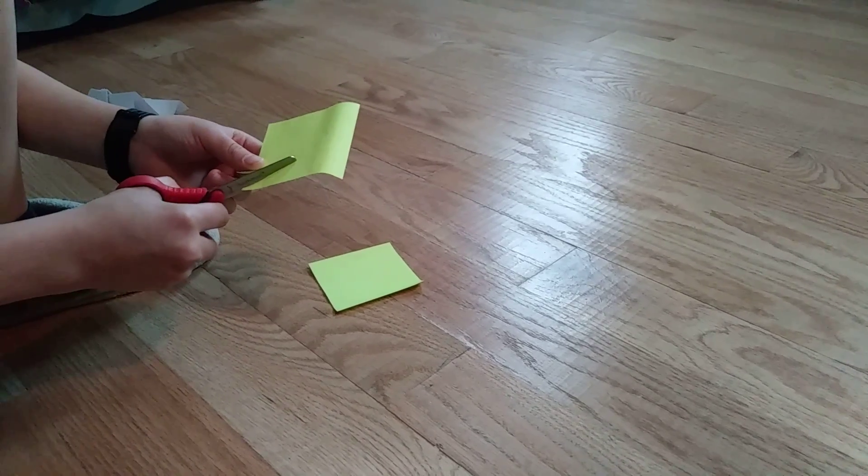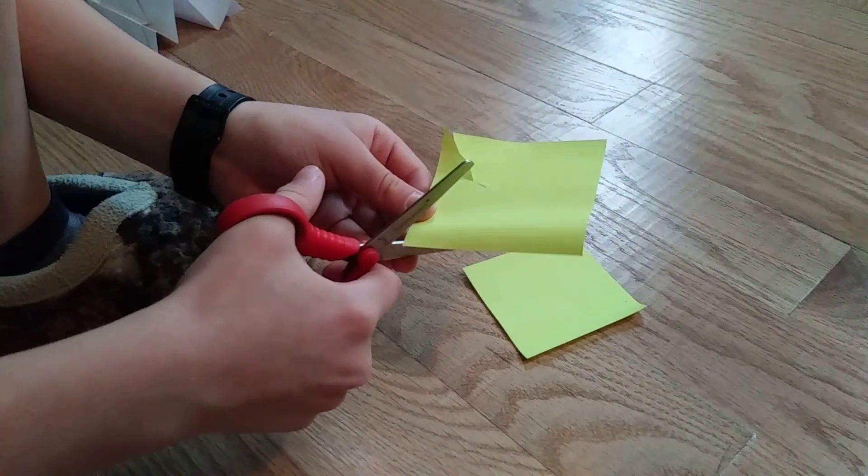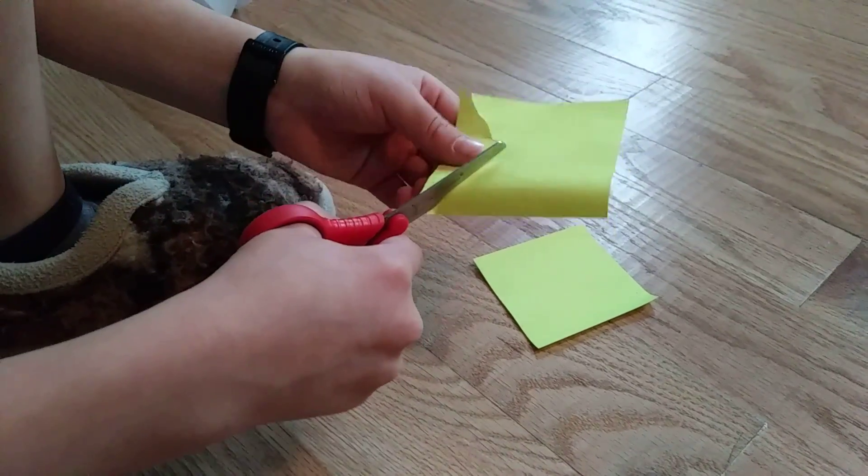So then you can kind of cut like this. I'm going to show you two ways how to do it, like the shurikens or ninja stars.